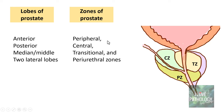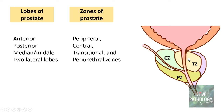Histologically, the prostate is characterized into different zones: the peripheral zone, the central zone, the transitional zone, and a very small periurethral zone. The small part of the prostate surrounding the urethra forms the periurethral zone; around that is the transitional zone; then the central zone; and the outermost part is the peripheral zone. It's important to know these zones because benign prostatic hyperplasia is most often seen in the periurethral and transitional zones, whereas malignancies of the prostate are found in the peripheral zones.